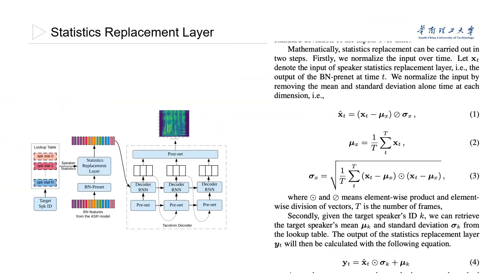Inspired by X-Factor, where the statistics of the hidden representation such as mean and standard deviation are used for speaker differentiation, we propose a statistic replacement layer in the voice conversion system to directly modify the hidden representation to have the target speaker's statistics.